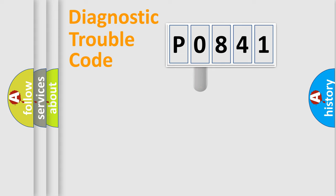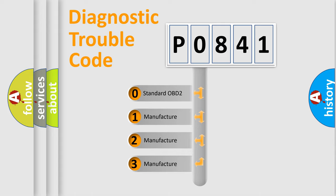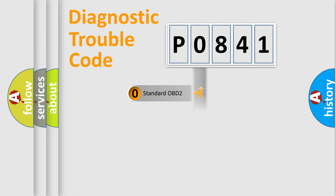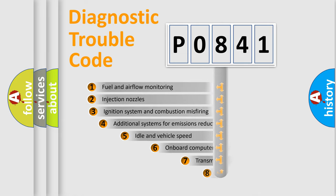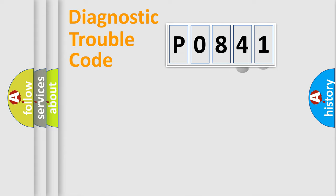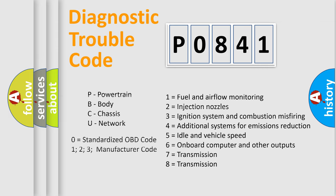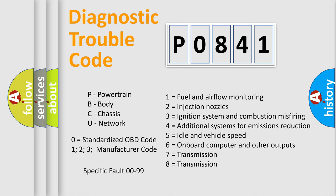This distribution is defined in the first character of the code. If the second character is expressed as zero, it is a standardized error. In the case of numbers one, two, or three, it is a more specific expression of a car-specific error. The third character specifies a subset of errors. Only the last two characters define the specific fault of the group — valid only when the second character is zero.